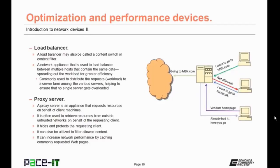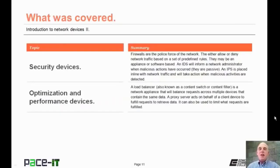Then there's the proxy server. A proxy server is an appliance that requests resources on behalf of a client machine. It's often used to retrieve resources from outside untrusted networks on behalf of the requesting client. It hides and protects that requesting client from the outside untrusted network. It can also be utilized to filter allowed content back into the trusted network, and it can increase network performance by caching or saving commonly requested web pages. That concludes this session on Introduction to Network Devices Part 2 — we talked about security devices and optimization and performance devices.